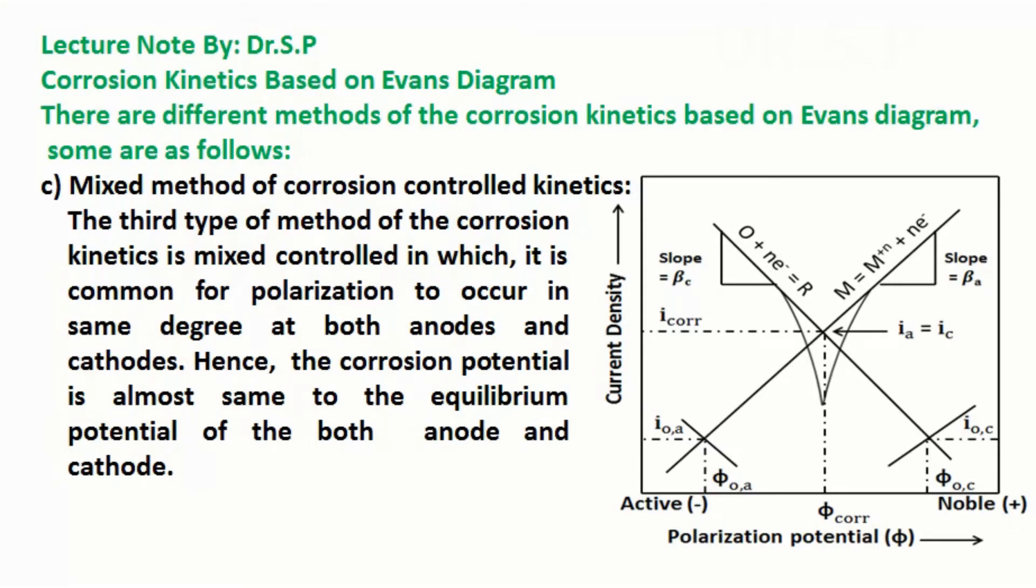Hence, the corrosion potential is almost same to the equilibrium potential of both anode and cathode. Both anodic and cathodic reactions are the components of the mixed electrodes involved in the corrosion process.